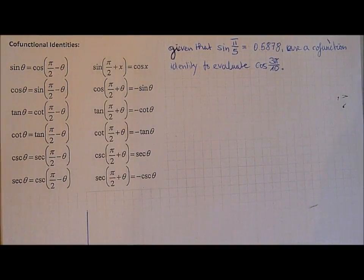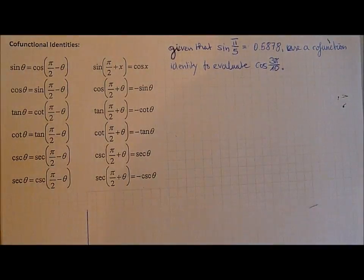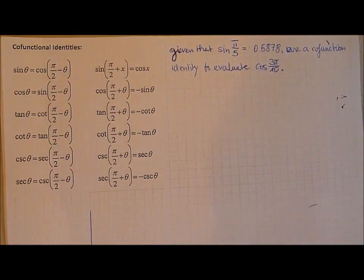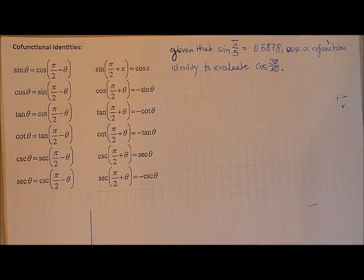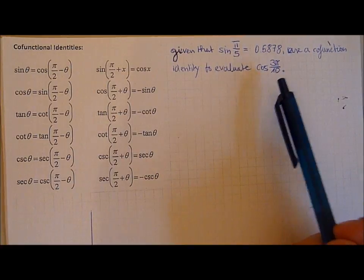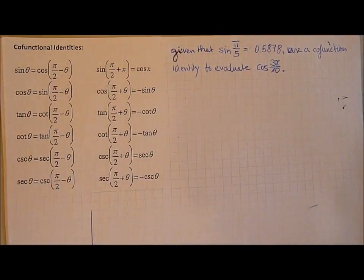Hey guys, today I'm going to show you a tutorial on how to use the cofunction identities to convert equivalent trig expressions. Cofunction identities are used to convert trigonometric expressions, let's say cos, into a form that is easier to work with.